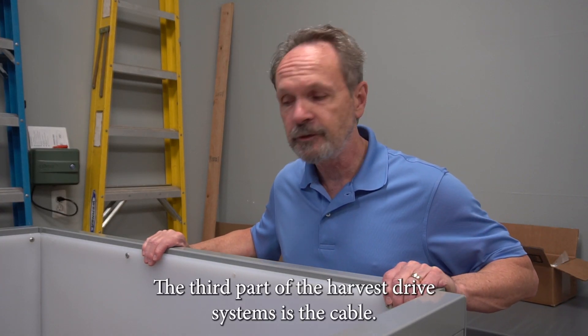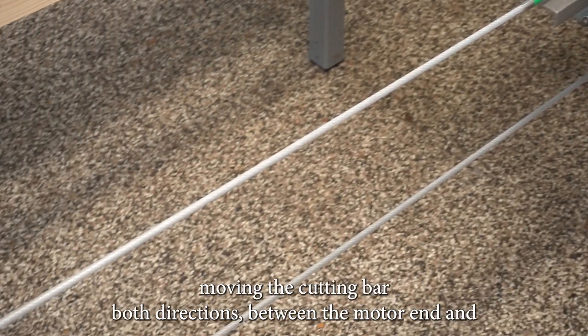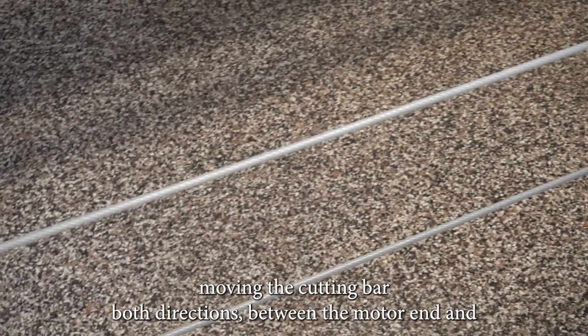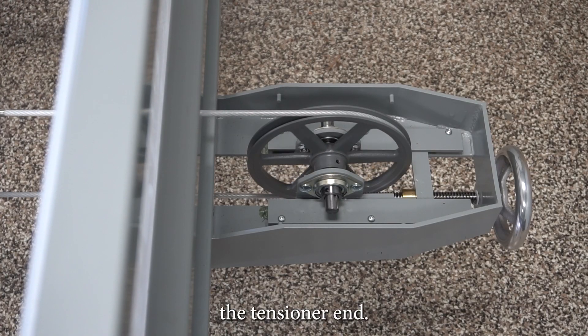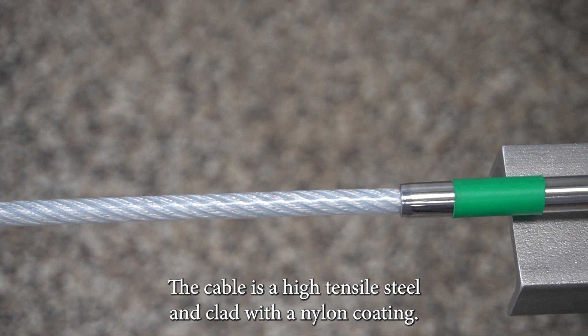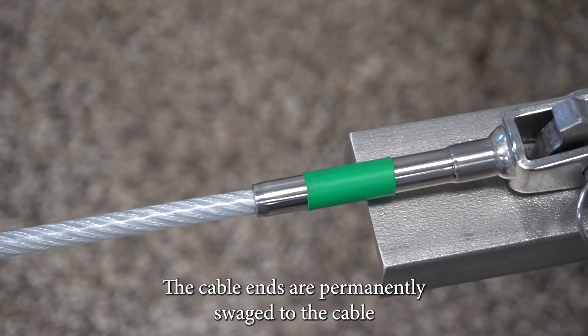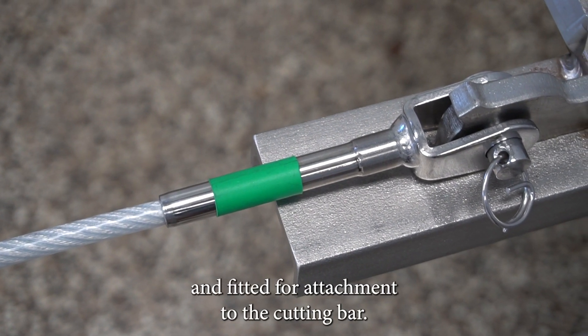The third part of the harvest drive is the cable. The cable is a continuous loop moving the cutting bar both directions between the motor end and the tensioner end. The cable is high tensile steel and clad with a nylon coating. The cable ends are permanently swaged to the cable and fitted for attachment to the cutting bar.